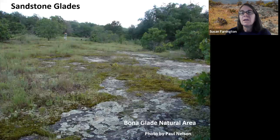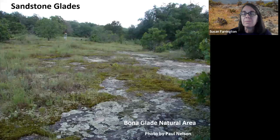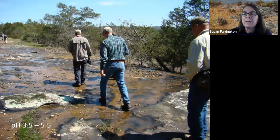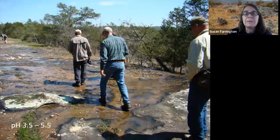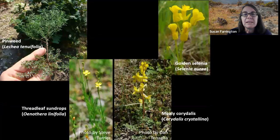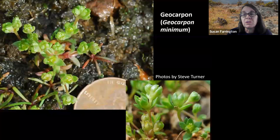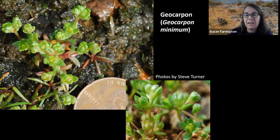Sandstone glades in Missouri are found on moderate to steep slopes and can occur on all aspects, but like other glades, are predominantly south and west facing. Our sandstone glades are generally small and located in a broad arc extending north around the Ozark Dome. Soils are shallow with a very strongly to moderately acid soil reaction and low fertility. Woody species include post oak, blackjack oak, winged elm, and farkleberry. Characteristic plants include pinweed, golden selenia, threadleaf sundrops, and mealy caridolus. A very rare specialist is the federally threatened geocarpon, or tiny Tim — note the penny in that photo to see just how tiny that plant is.